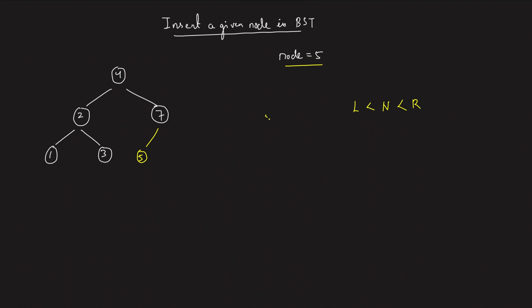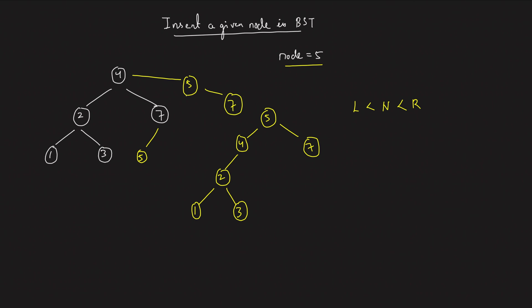There can be multiple valid insertions. For example, you could restructure the tree keeping five at the top, then four, seven, two, one, three — the height is longer but it's valid. Another option is to insert five between four and seven. So there can be multiple possibilities for inserting the given node. You need to find any one valid insertion and return the root of the modified binary tree.